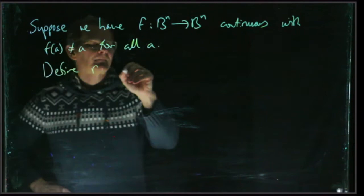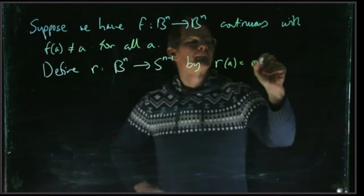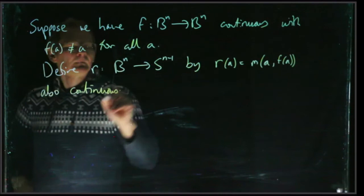We can define a map now, r from B^n to S^(n-1). r(a) is just going to be m(a, f(a)). And that's also continuous.